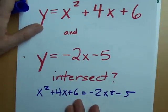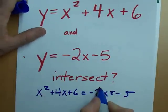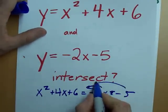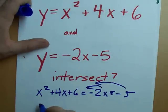Step two. Move everything to one side. We can move the minus 2x over. We can move the minus 5 over. What do we get?